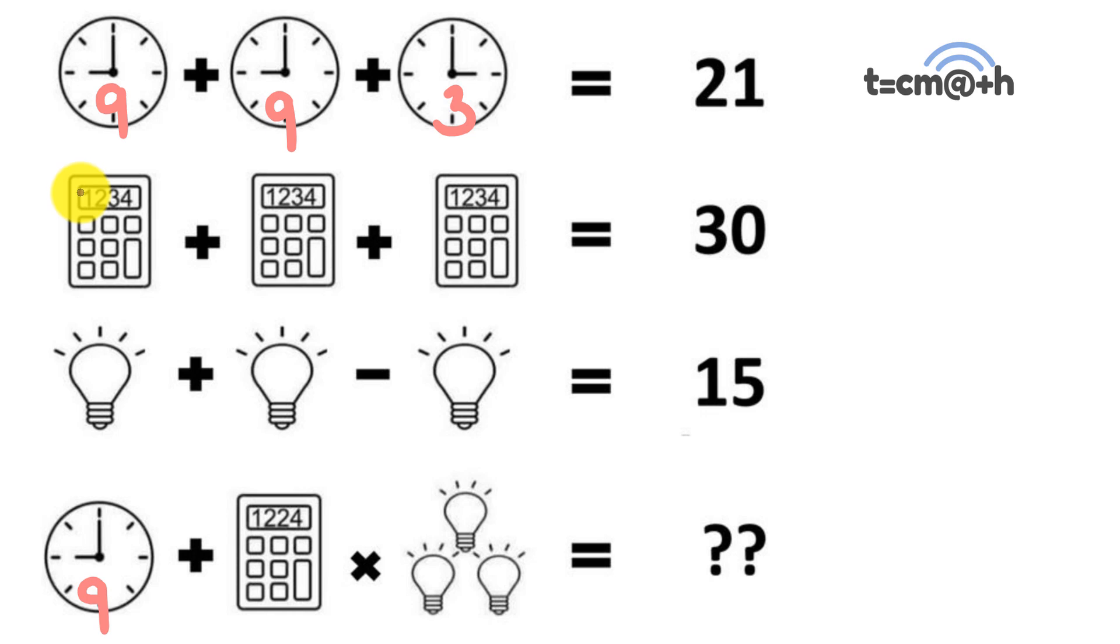So the next part of this problem, we're going to be looking at the calculators. Now you're going to notice with these calculators that they have numbers on them: one, two, three, four. This amount plus this amount plus this amount is equal to 30.